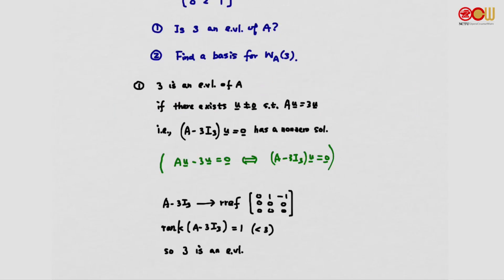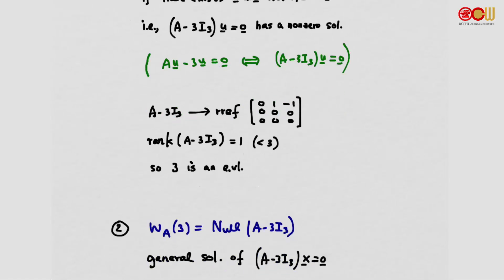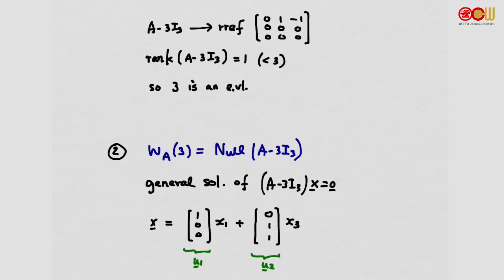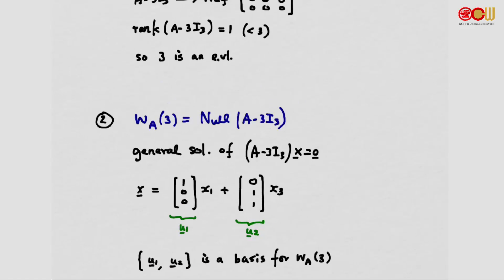Now we would like to find the basis for the eigenspace W_A(3). By definition, this is the null space of A minus 3I. We find the general solution of the homogeneous equation from the reduced row echelon form, and we can immediately write down the general solution. The vectors U1 and U2 form a basis for W_A(3).